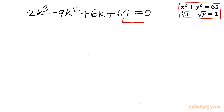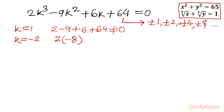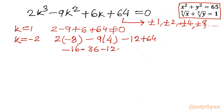Using the rational root theorem, we find factors of the constant 64: ±1, ±2, ±4, ±8, and so on. Testing k = 1 and k = -1 do not satisfy the equation since 64 is large. Testing k = -2: 2(-8) - 9(4) + 6(-2) + 64 = -16 - 36 - 12 + 64 = 0. So k = -2 is our root.